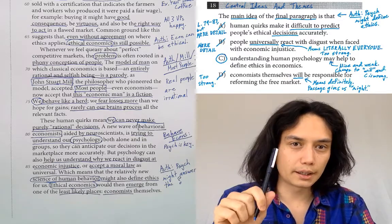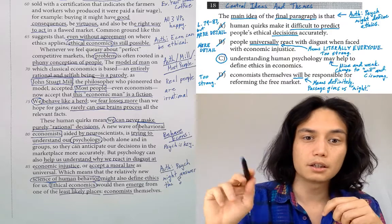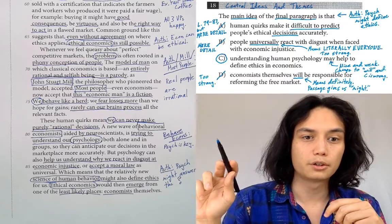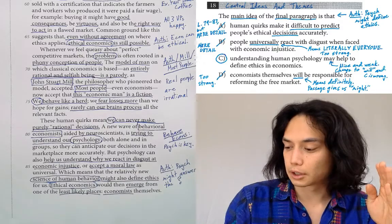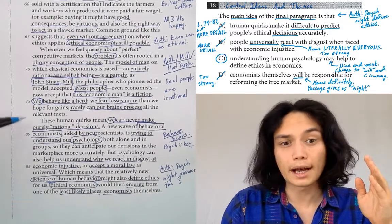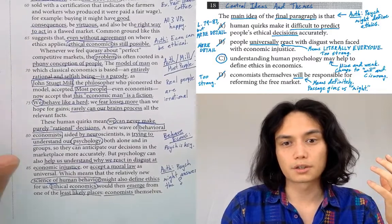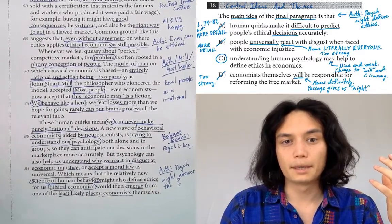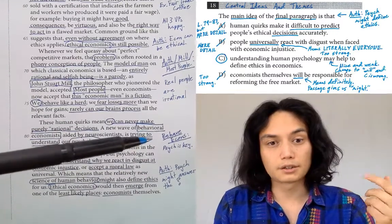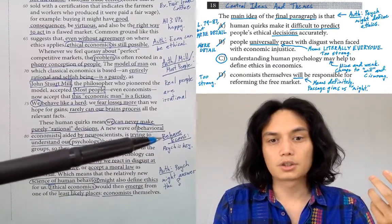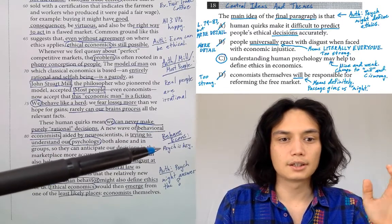So with that in mind, let's think about the final paragraph and what the main idea is. This is where our notes are going to be super-duper helpful. We're going to look at the final paragraph, and if we're asking what's the main idea, let's just look straight to our notes, because our notes are often going to be about the main idea. The main idea of this paragraph, at least according to our notes, is that there's this new viewpoint — behavioral economists — and they think that psychology is key.